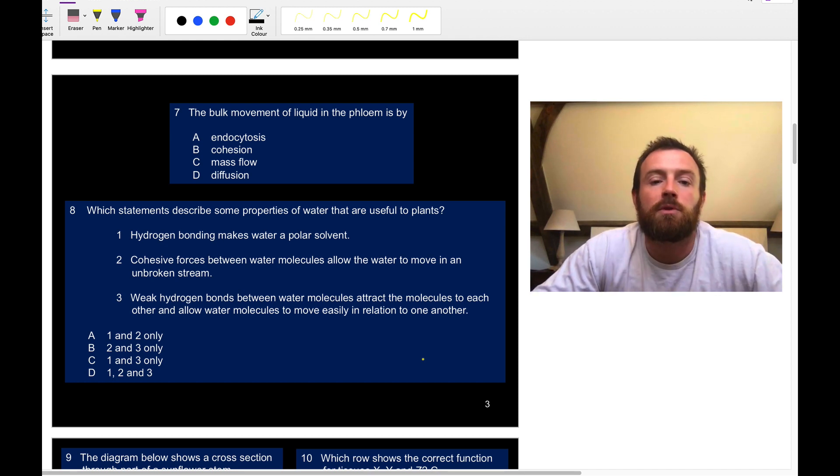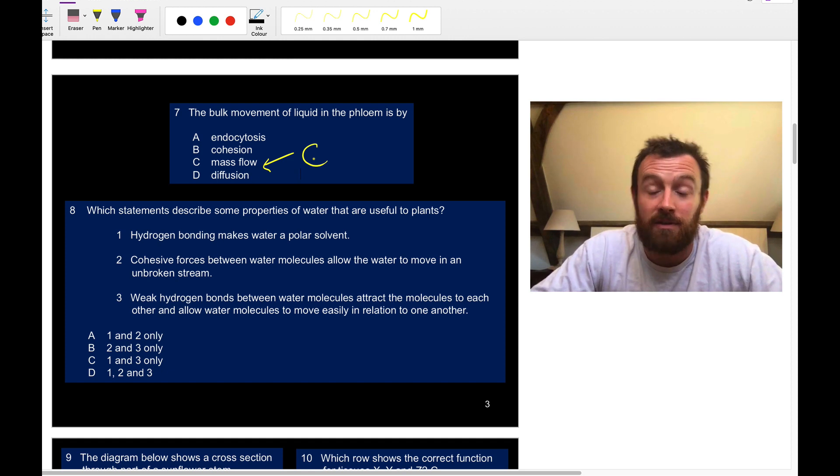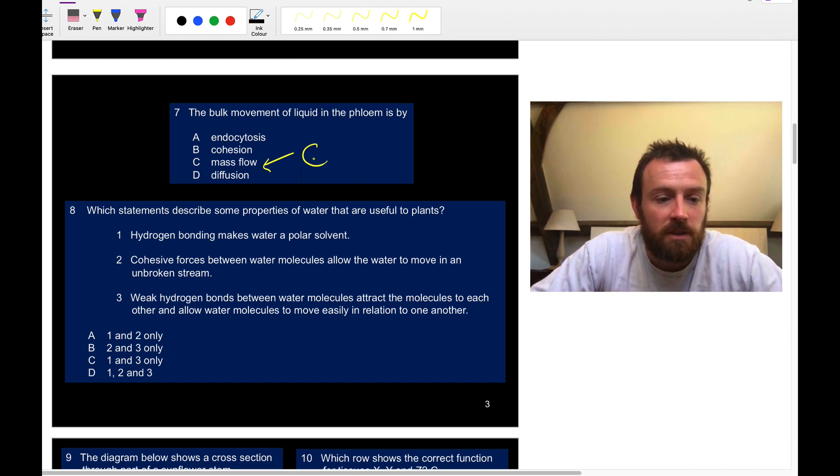Question seven: the bulk movement of liquid in the phloem is by mass flow. Remember we have active loading of assimilates into the phloem at the source, water follows by osmosis, and then we have mass flow to the sink where the assimilates are removed. Which statements describe some properties of water that are useful to plants? Hydrogen bonding makes water a polar solvent, that is useful. It means that water is the medium in which chemical reactions can take place and the medium for the transport system. Cohesive forces between water molecules allow the water to move in an unbroken stream, that's very useful for the xylem.